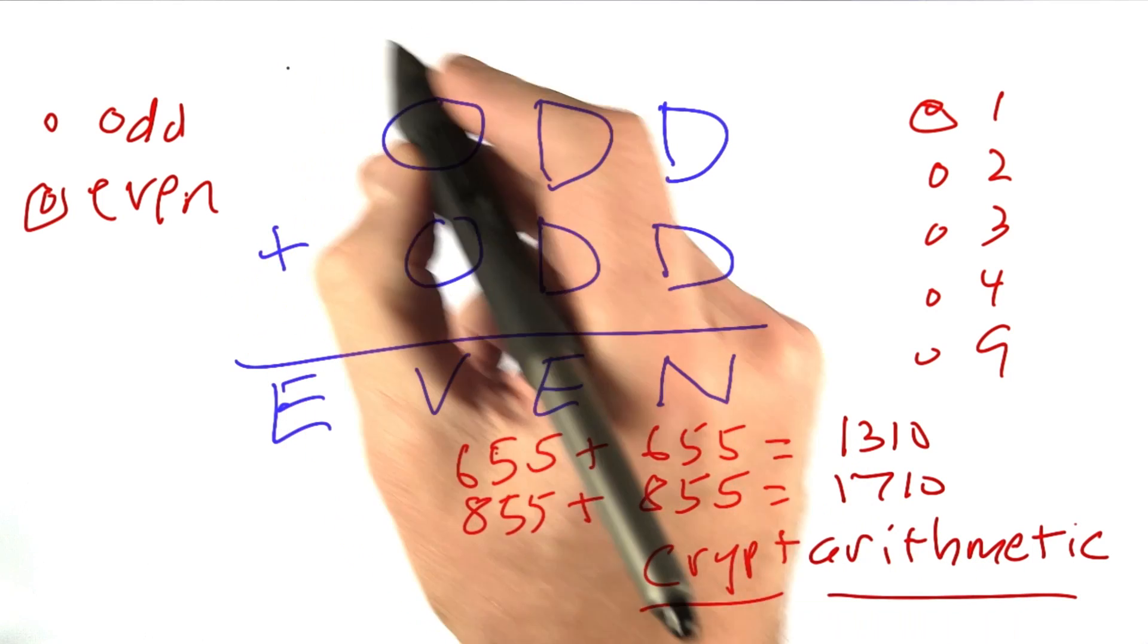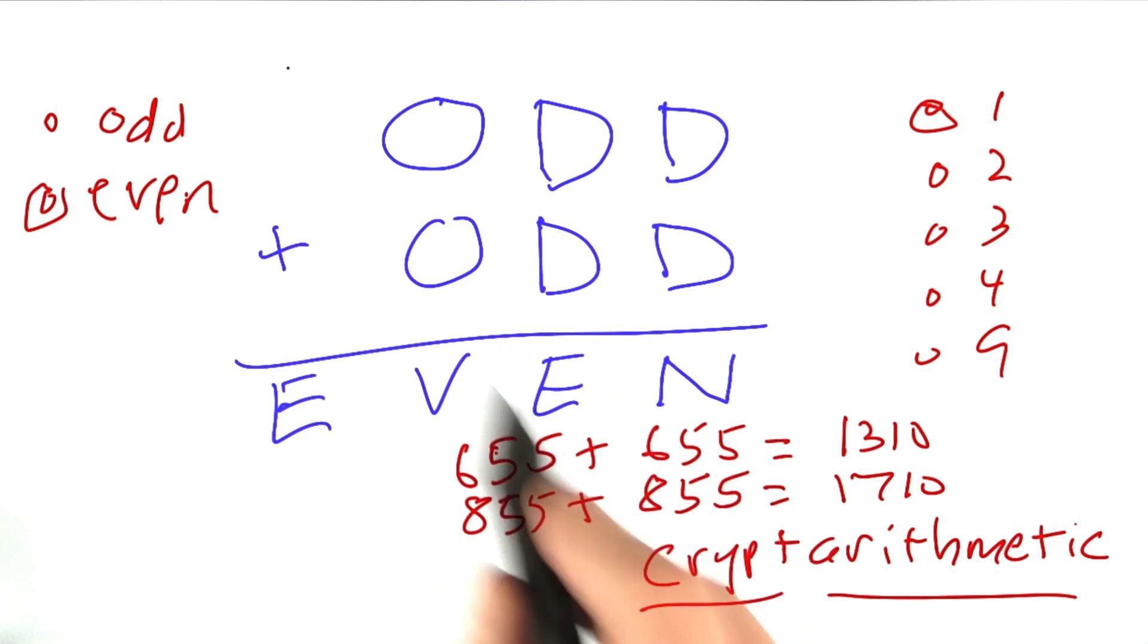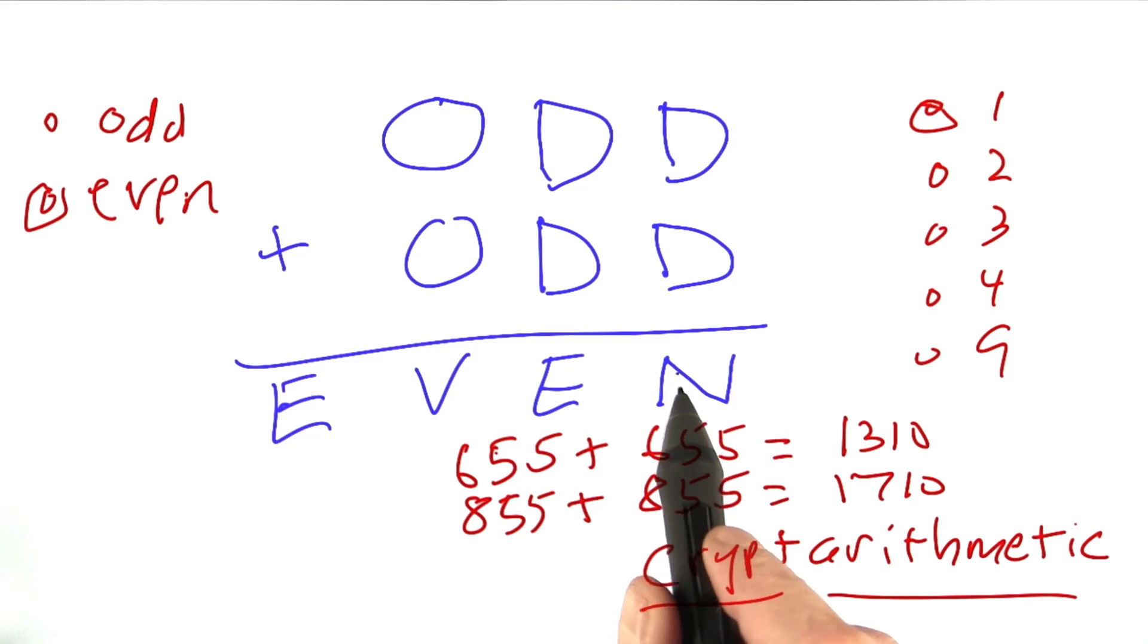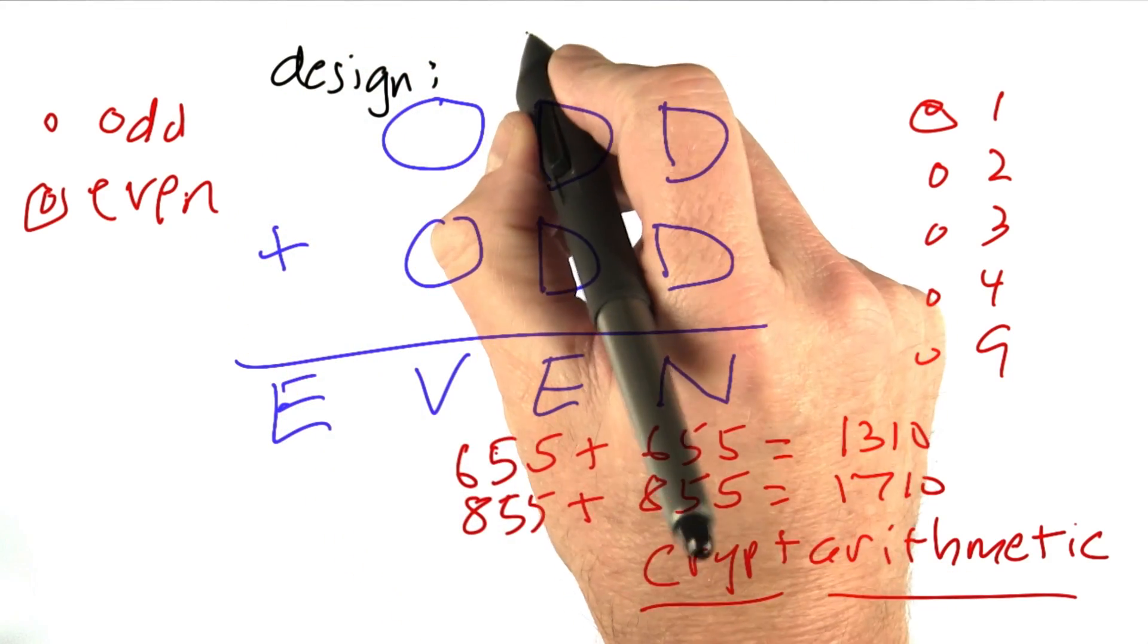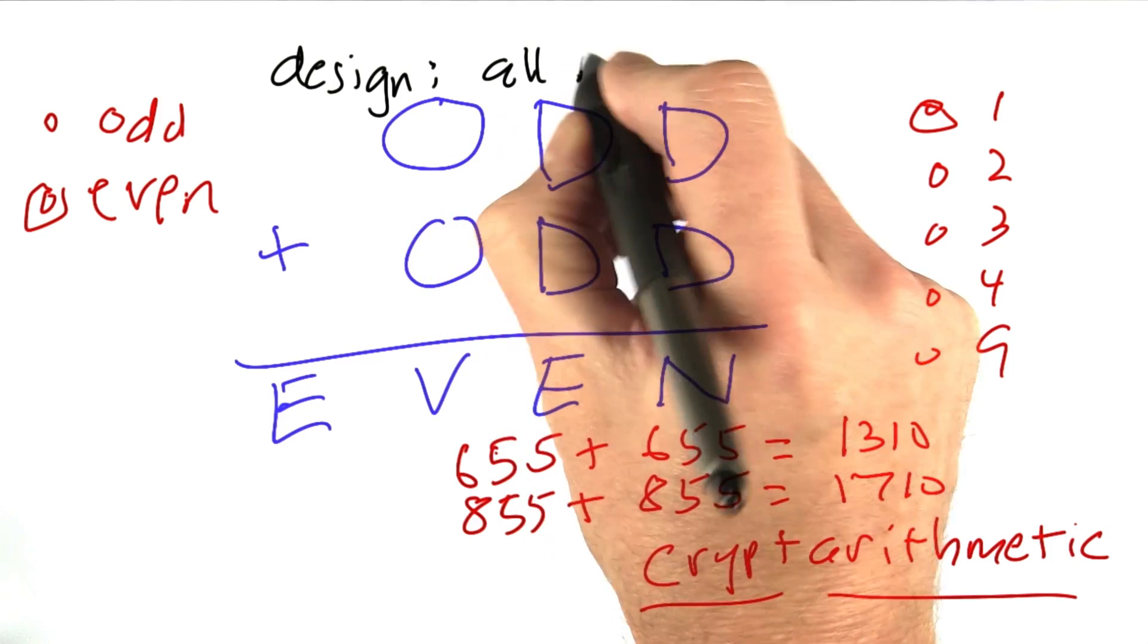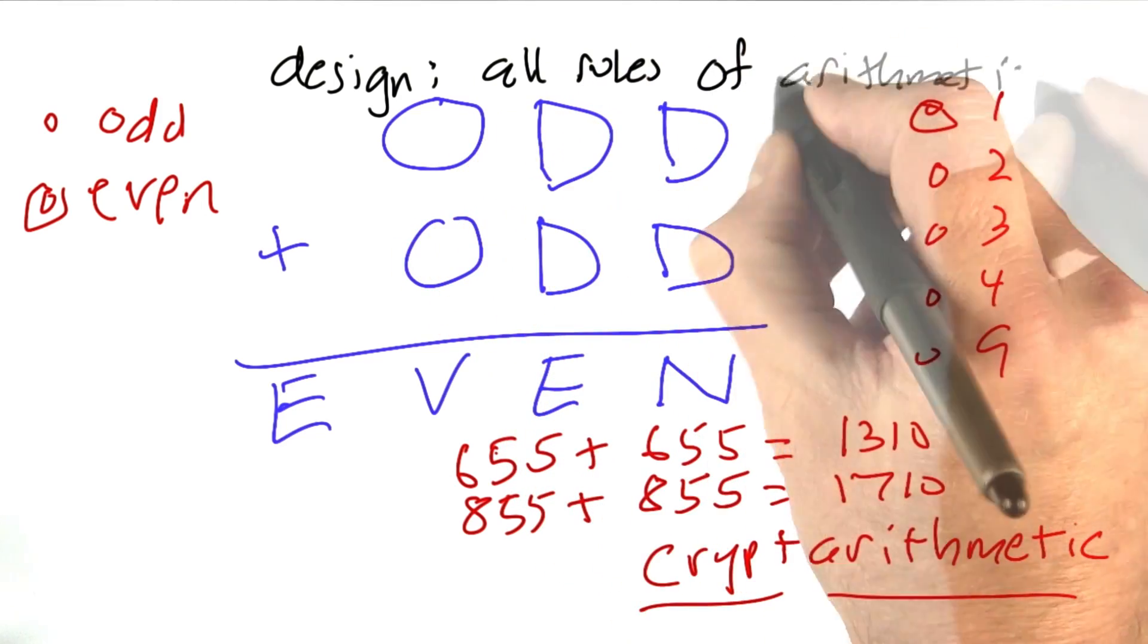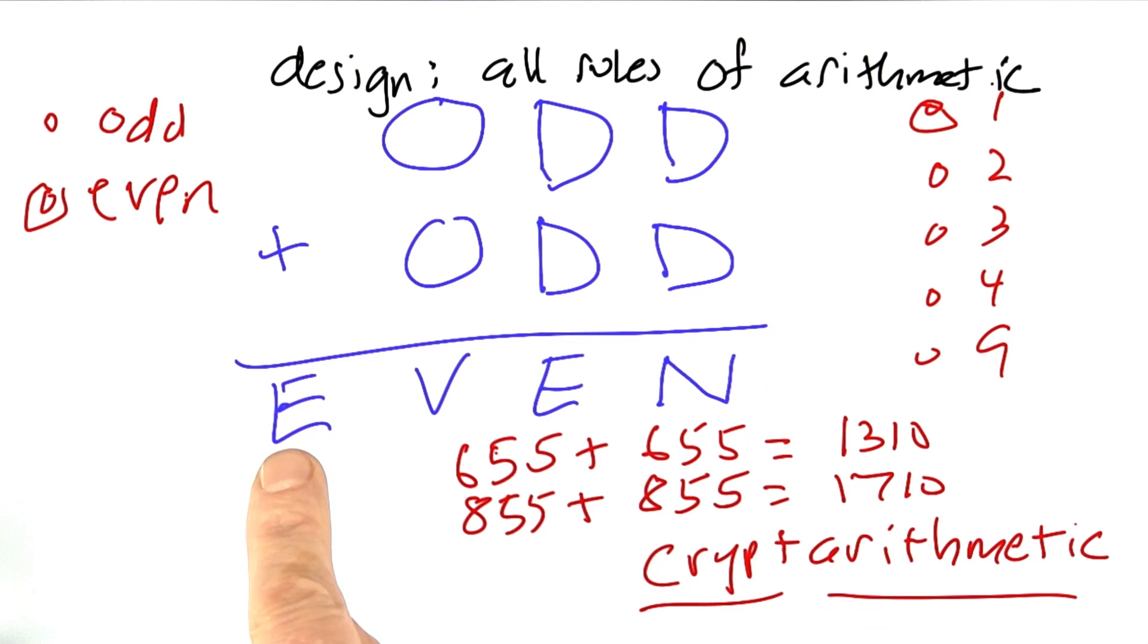So here's one possible design for coding up a solver for these types of problems, and that design would be to write down all the rules of arithmetic in terms of carry digits, in terms of odd and even, and so on.